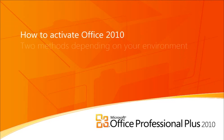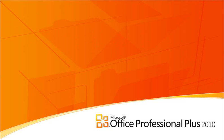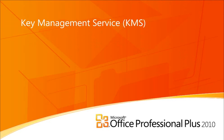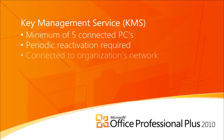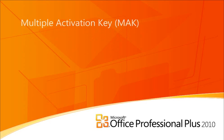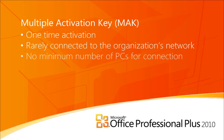Volume license customers have two easy methods to activate Office 2010 client products. First, there's KMS, or Key Management Service. This solution is ideal for PCs that are usually connected to the company network because it eliminates the need for each PC to connect to Microsoft activation servers. Then, there's Multiple Activation Key, or MAK. MAK is perfect for organizations that need to offer more flexibility to their users. Many organizations will use both methods. The licensing and activation process works differently for each, so let's talk about them a little bit more.